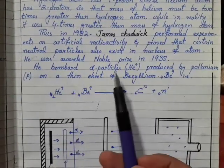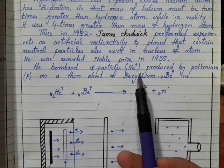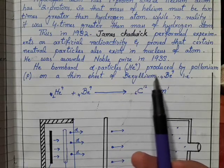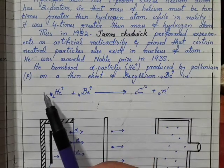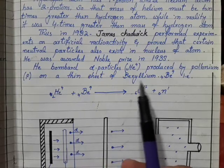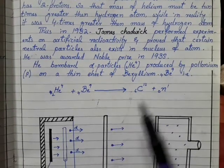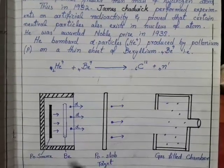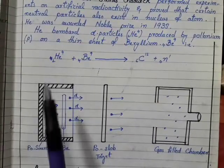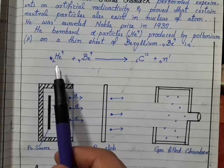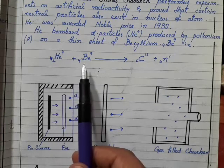James Chadwick was awarded Nobel Prize in 1935. He bombarded alpha particles, helium atoms produced by polonium, on a thin sheet of beryllium atoms. Let's see what he did: James Chadwick bombarded alpha particles on beryllium.